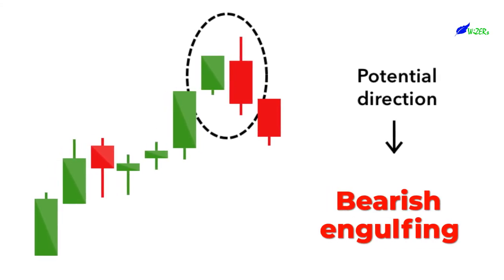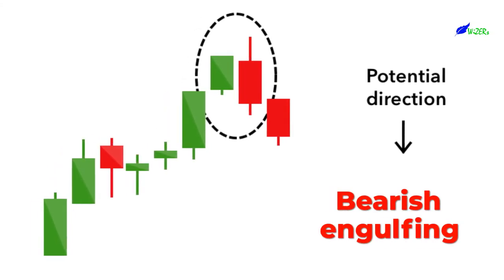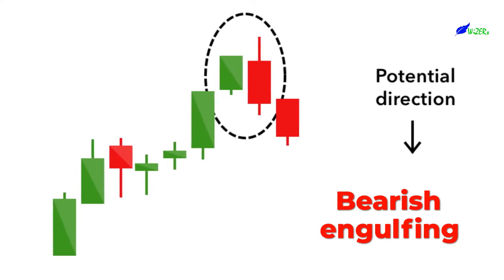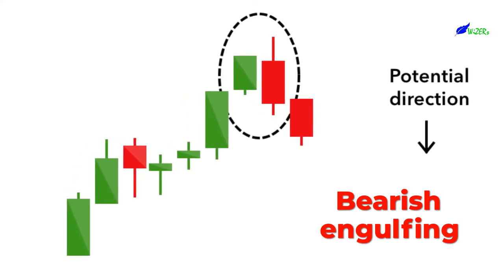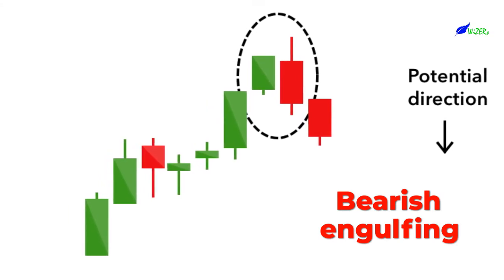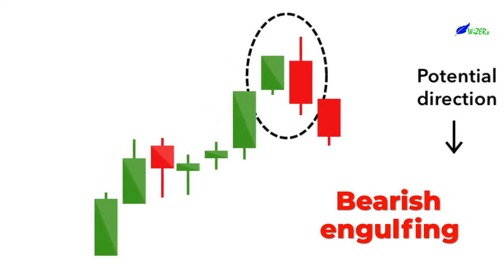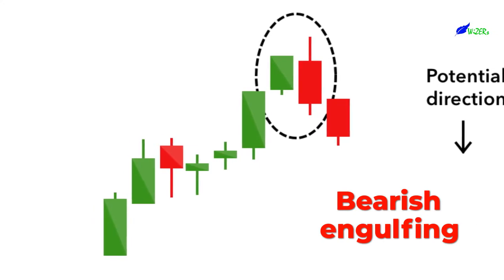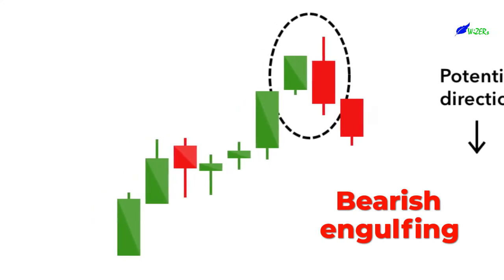Bearish Engulfing. A bearish engulfing pattern occurs at the end of an uptrend. The first candle has a small green body that is engulfed by a subsequent long red candle. It signifies a peak or slowdown of price movement, and is a sign of an impending market downturn. The lower the second candle goes, the more significant the trend is likely to be.